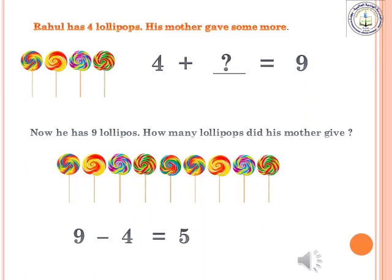How can we find this missing number? To get this number we can use subtraction. If we subtract 4 from 9 we will get the answer: 9 minus 4 equals 5. That means his mother gave 5 lollipops. Here we use subtraction to find the missing number in addition.